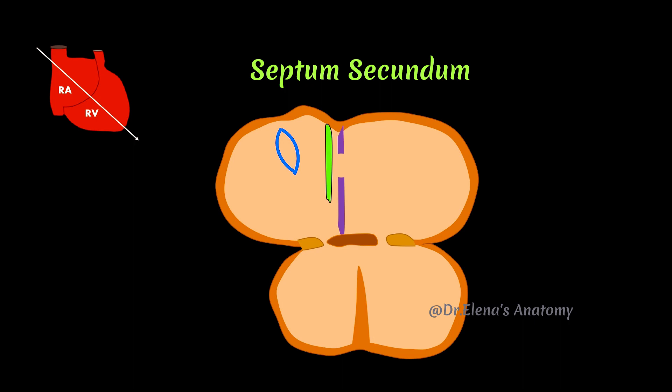It grows and covers the foramen secundum present in septum primum and this leads to the formation of a valvular foramen called foramen ovale. It remains patent for the rest of fetal life and shunts blood from right to the left atrium.